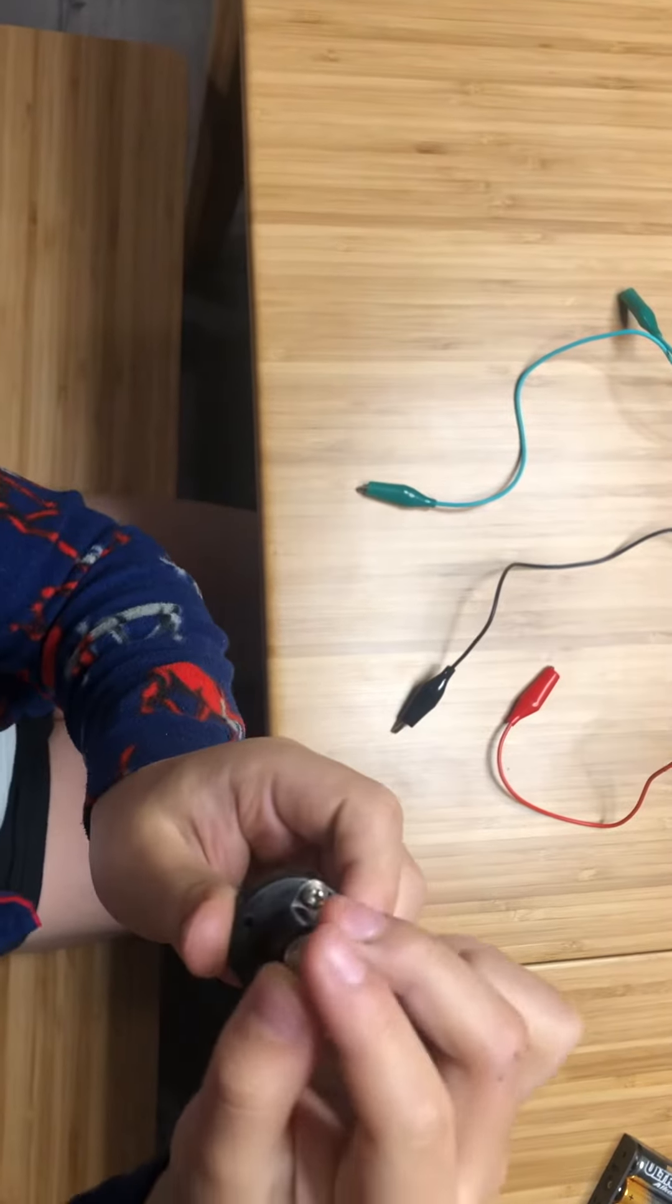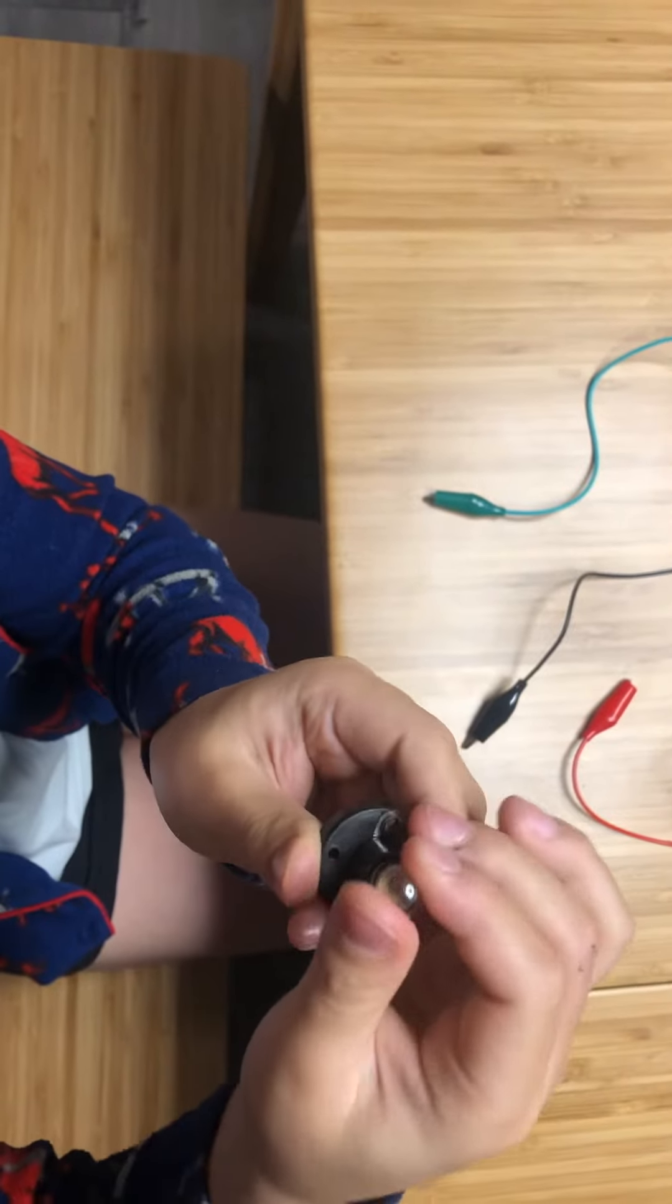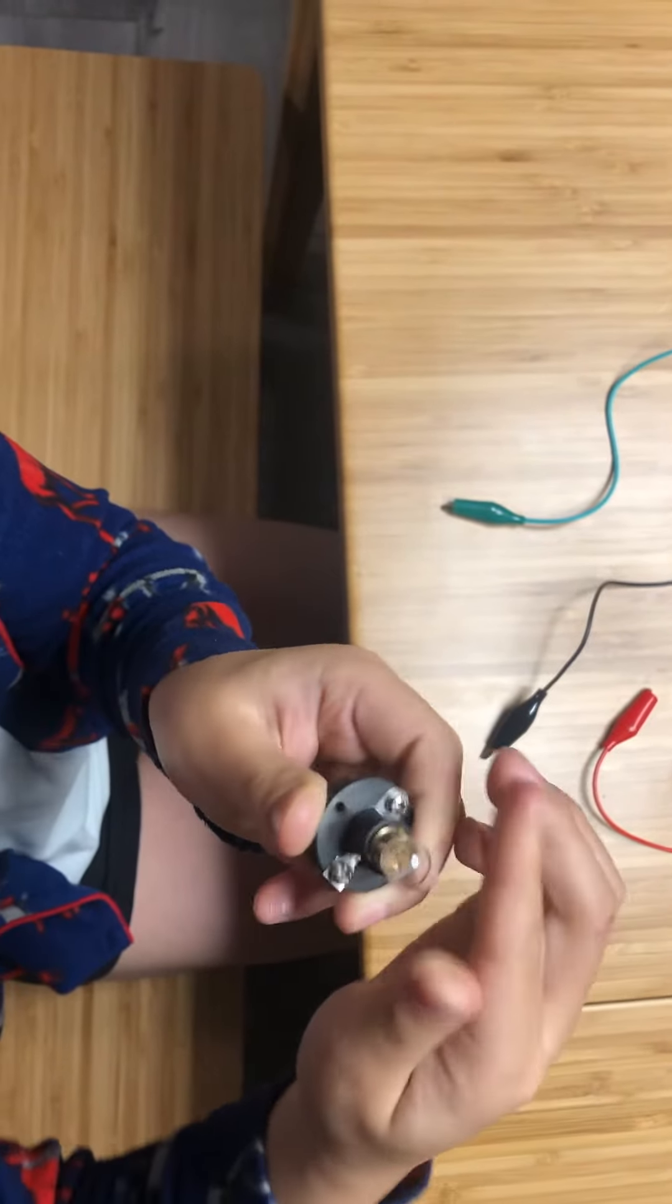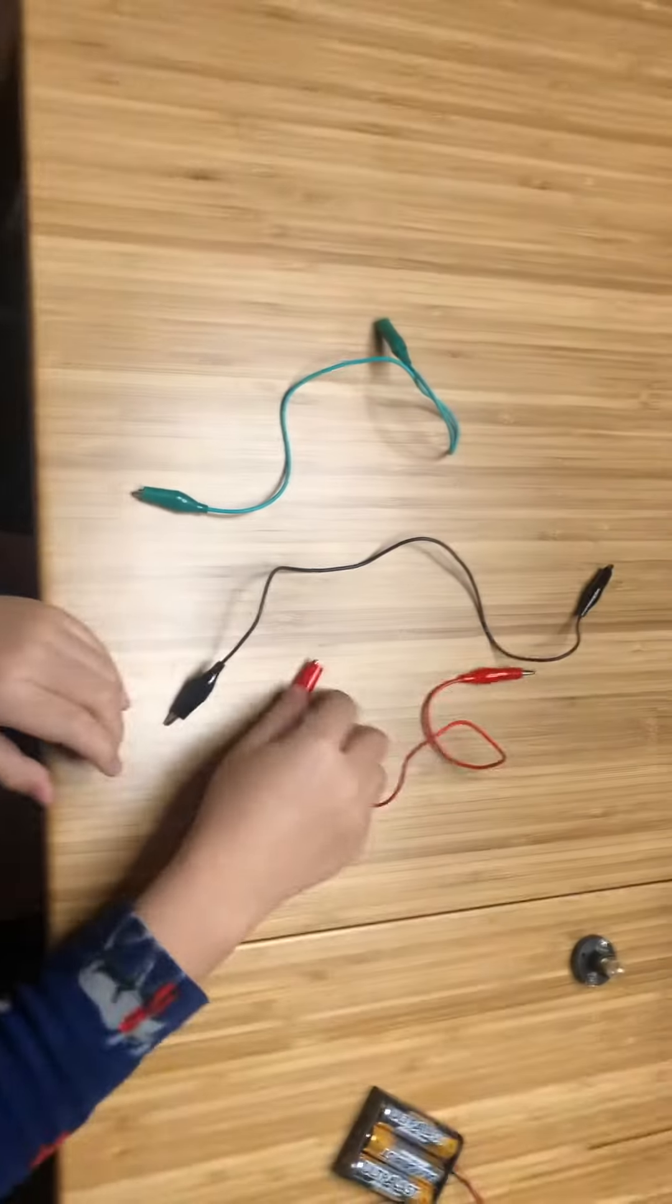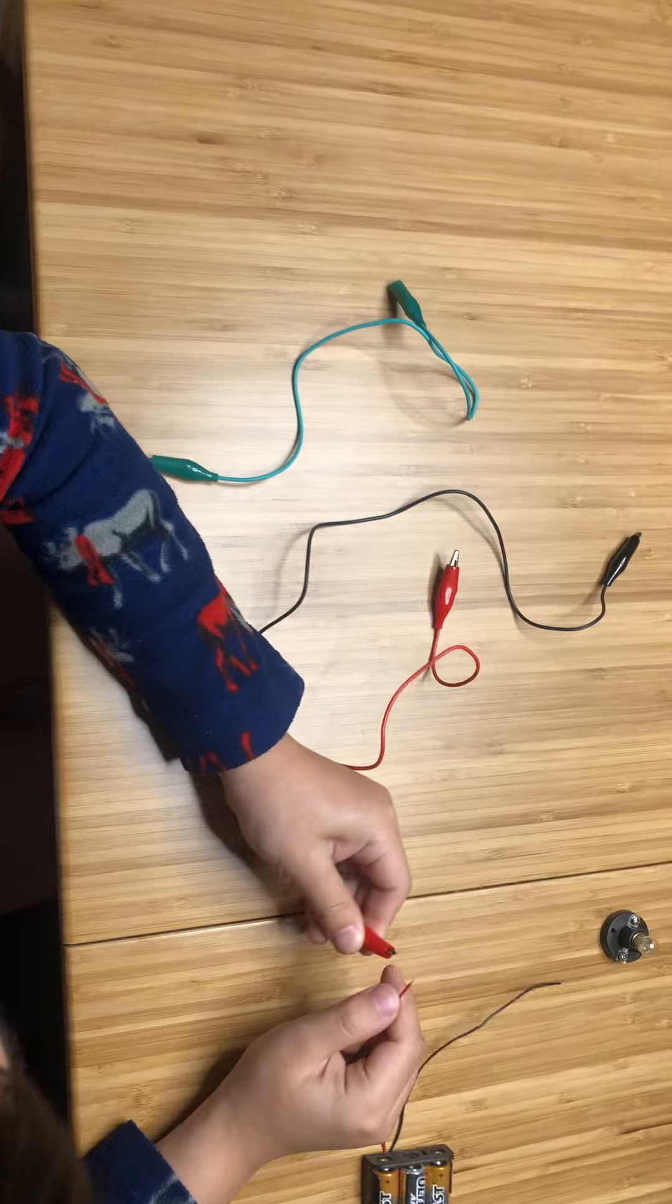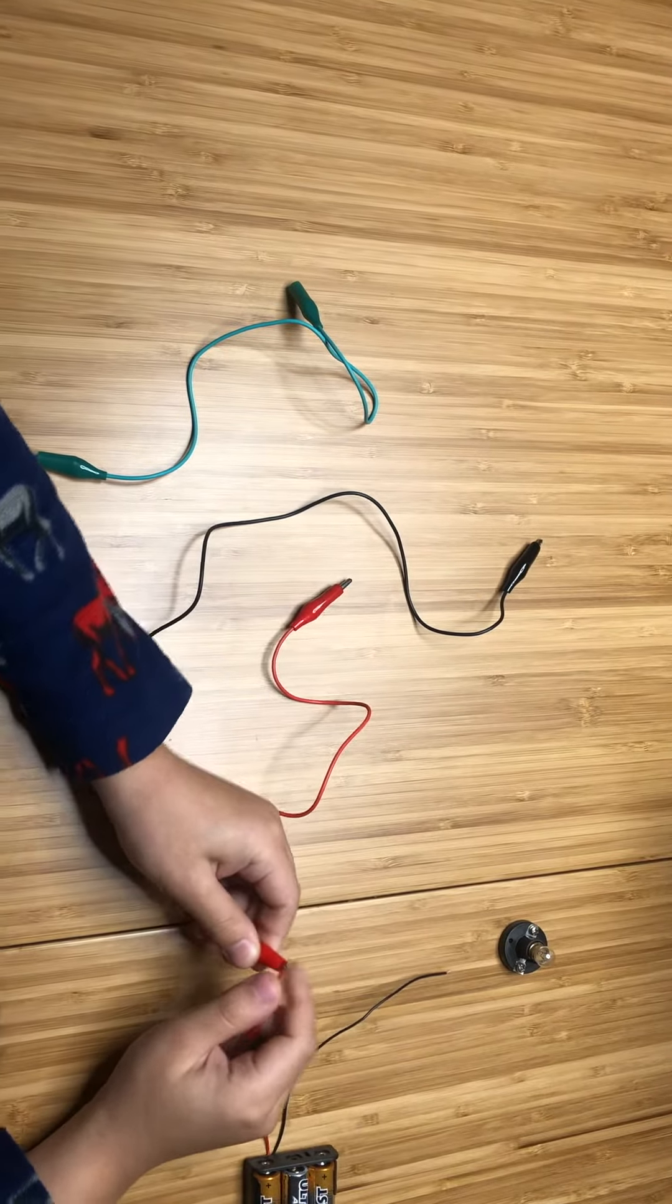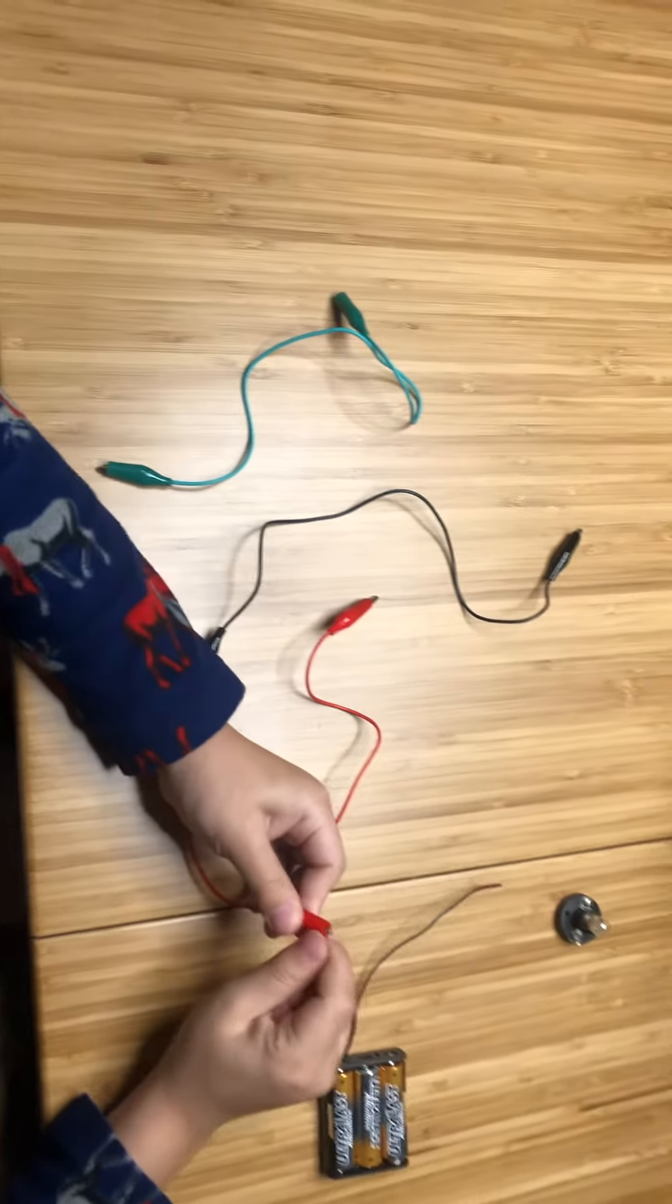Make sure it's lined up properly. Okay, now we're ready to assemble. First, take the red alligator clip and clip it into the red wire, but make sure it doesn't do this. You have to do it right where the metal wire is.